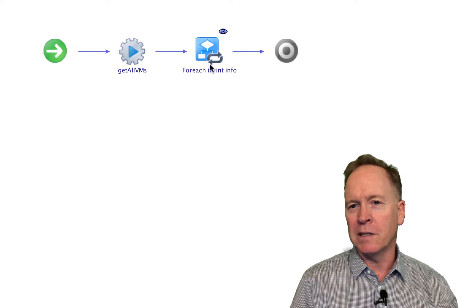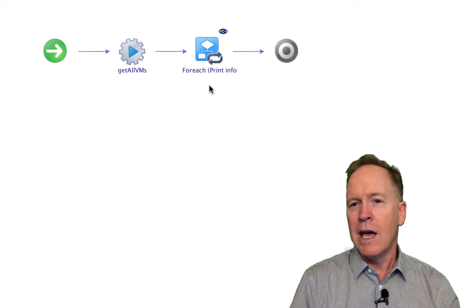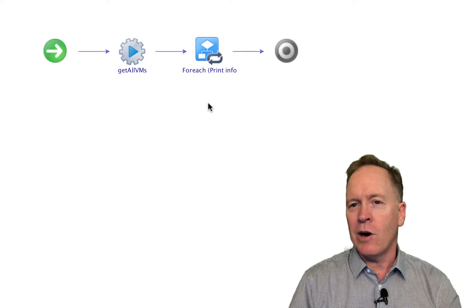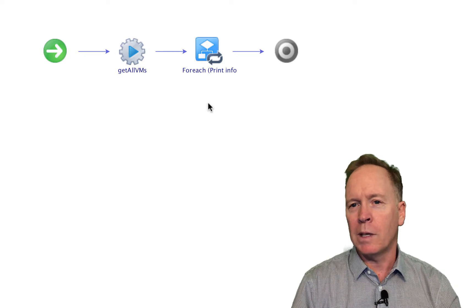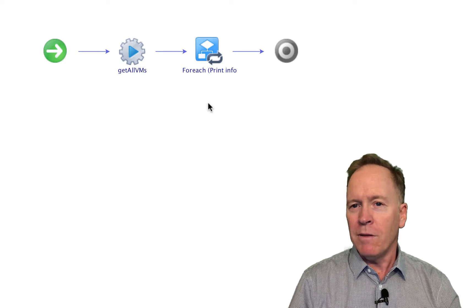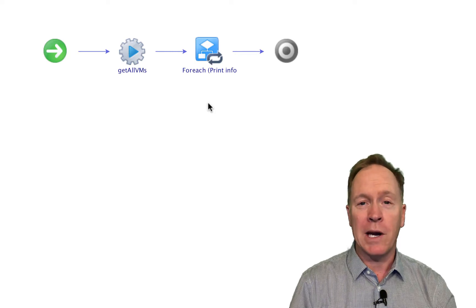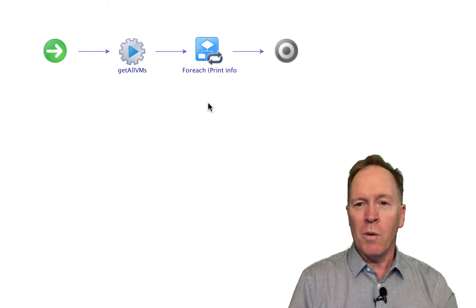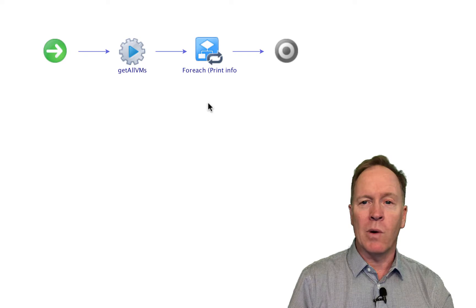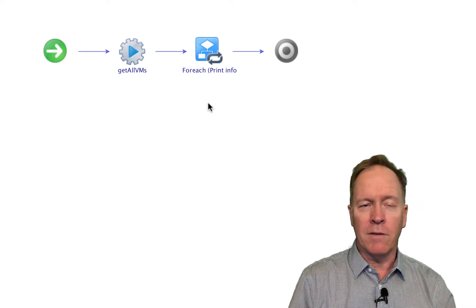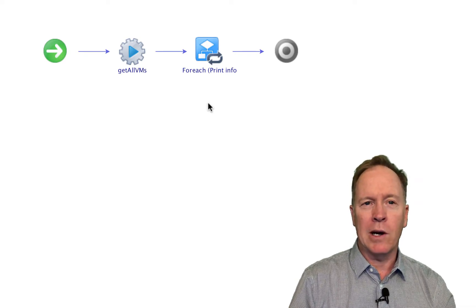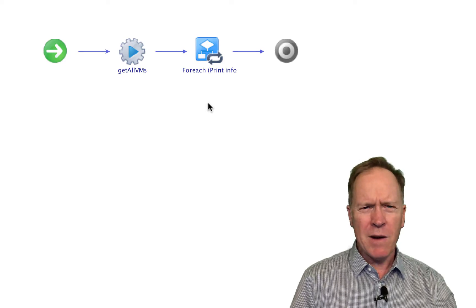What a FOREACH element does is it calls a workflow. But unlike the workflow caller schema element we've seen before, the FOREACH schema element calls the workflow you specify multiple times. So in this workflow, we're going to get a list of all the VMs, and then for each of those VMs, we're going to call a particular workflow. Let's find out which workflow.